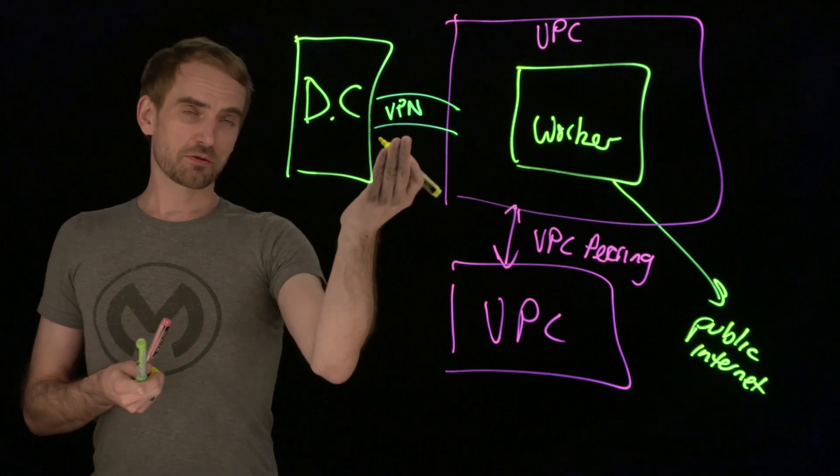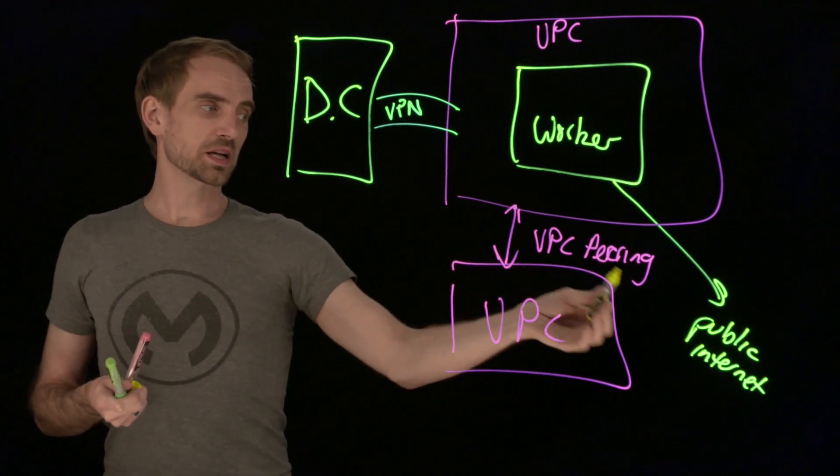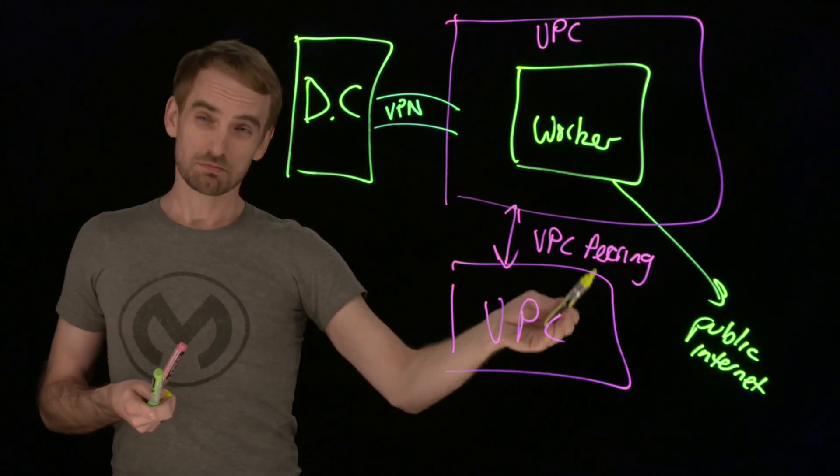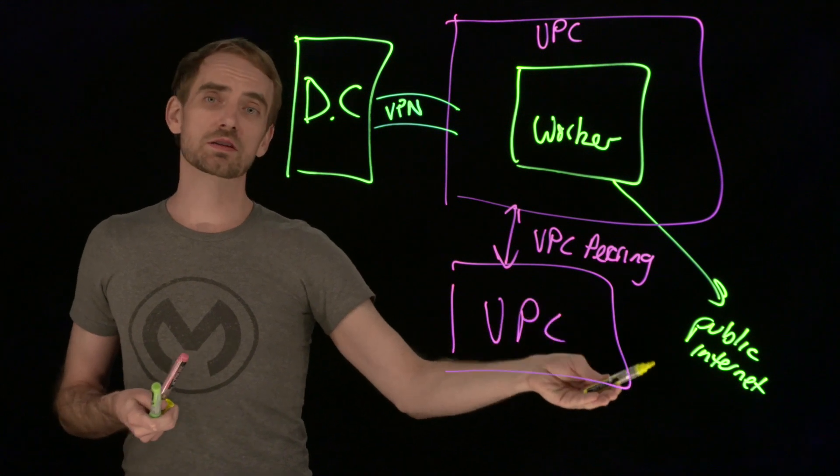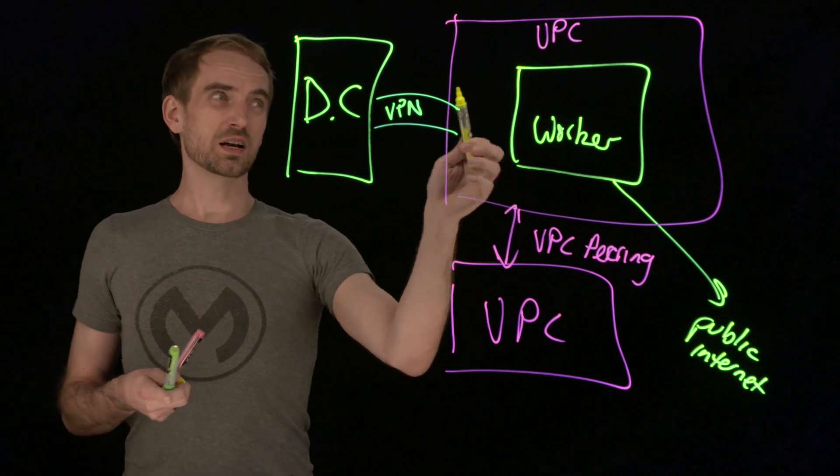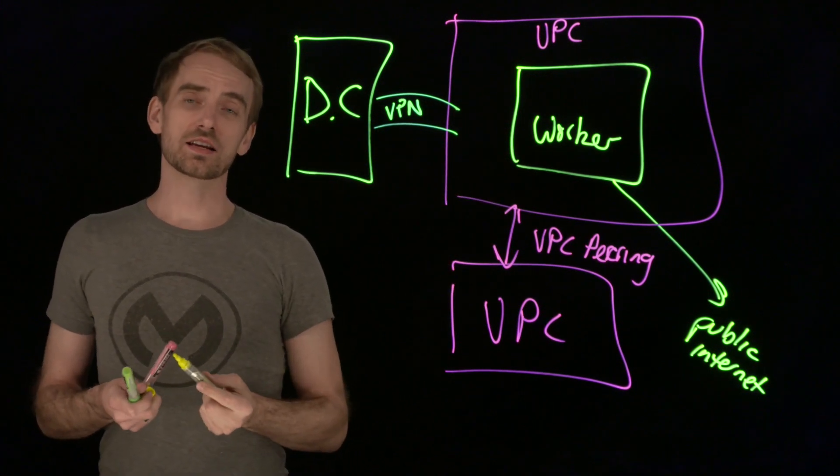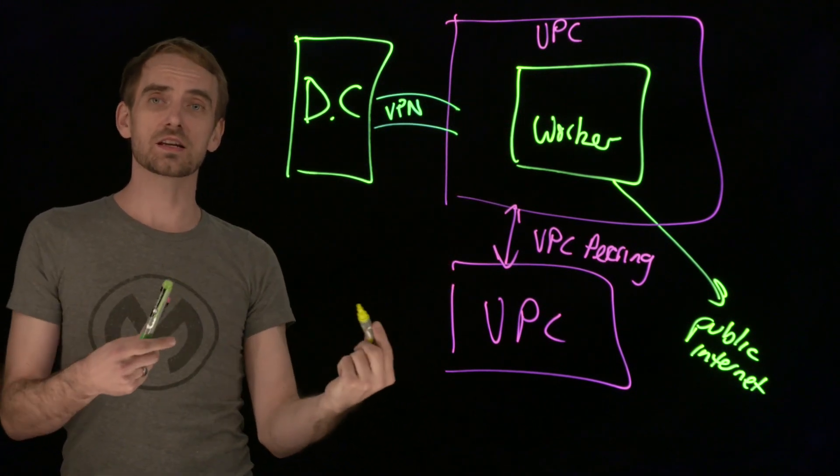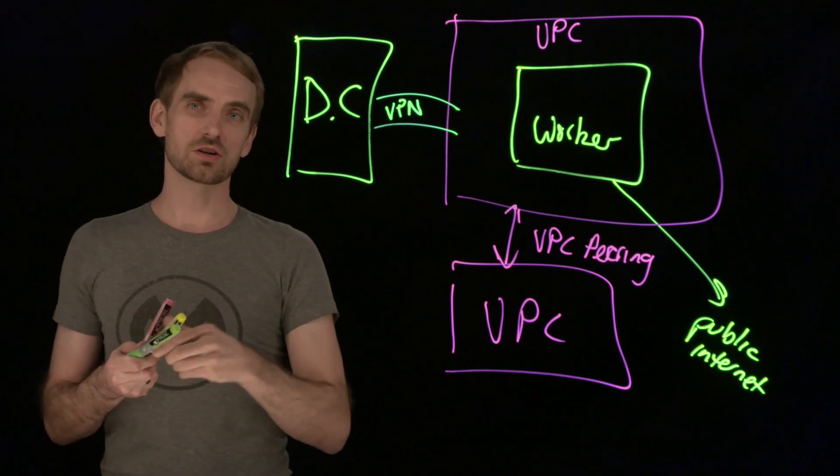That one is preferred by a lot of people because they don't want to be going out to the public internet - it means more hops, more security risks and so on. Your VPN is a secure channel that allows you to essentially extend your data center into the CloudHub VPC. It's almost like an extension of your data center.